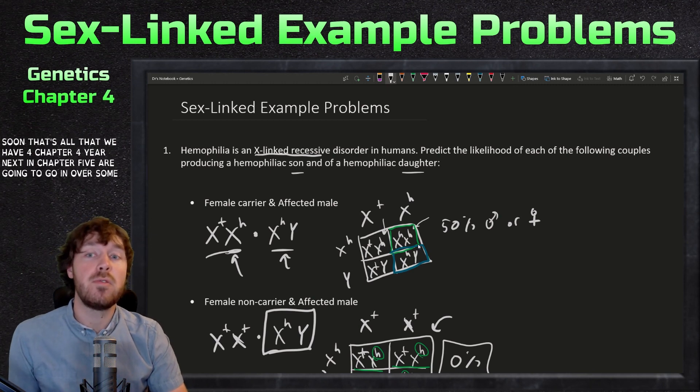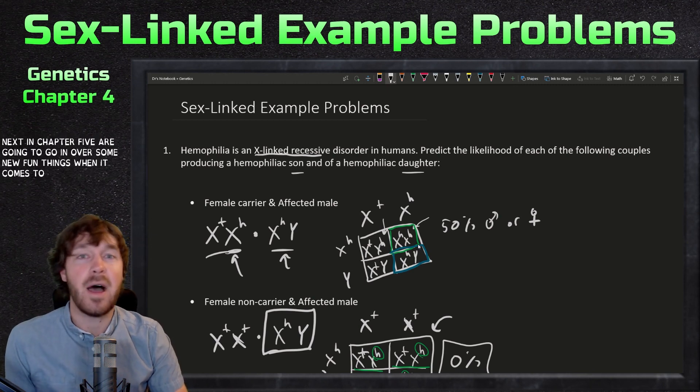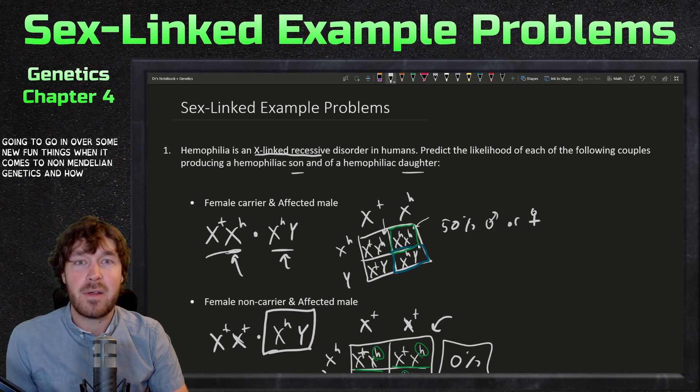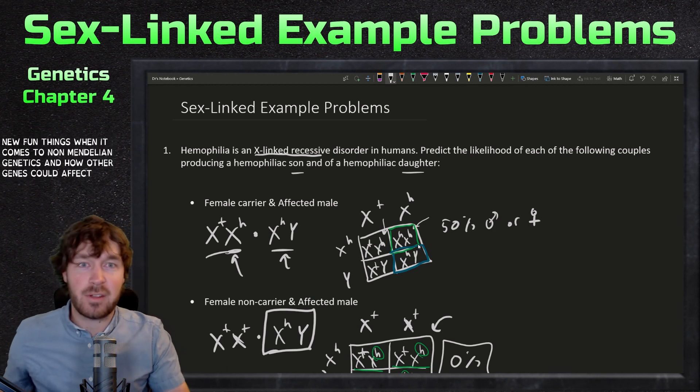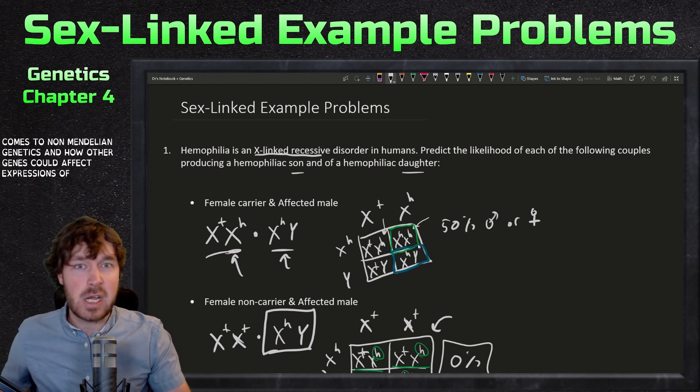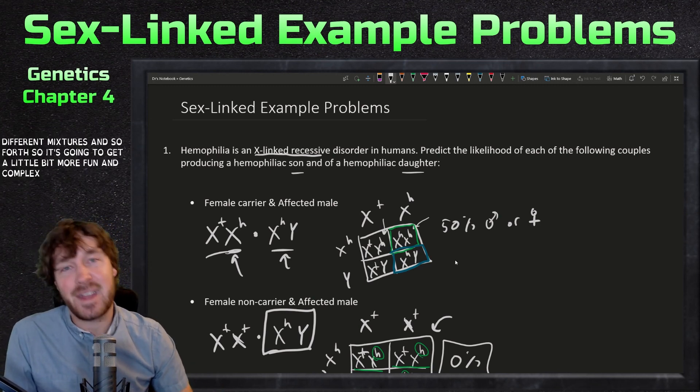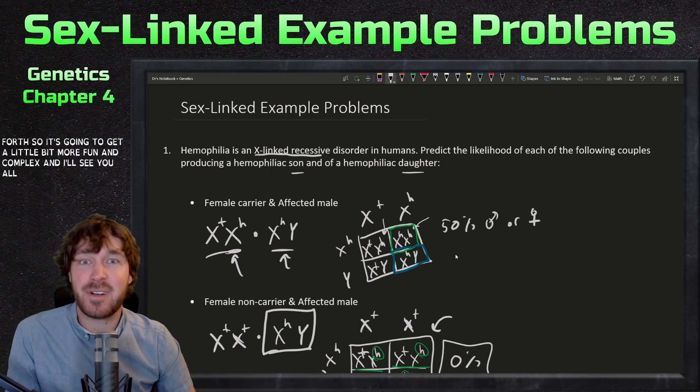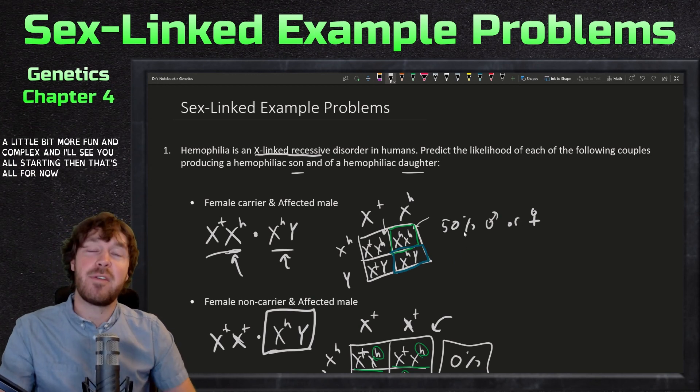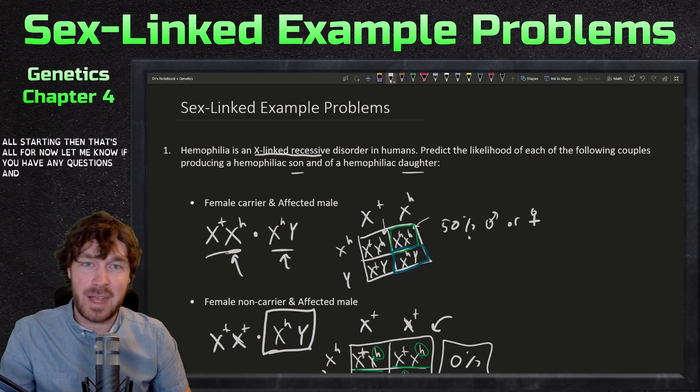That's all that we have for Chapter 4 here. Next in Chapter 5, we're going to be going over some new fun things when it comes to non-Mendelian genetics and how other genes could affect certain expressions of these genes and how you can have different mixtures and so forth. It's going to get a little bit more fun and complex, and I'll see you all starting then. That's all for now. Let me know if you have any questions and have a great day. Bye bye.